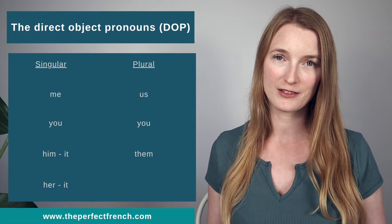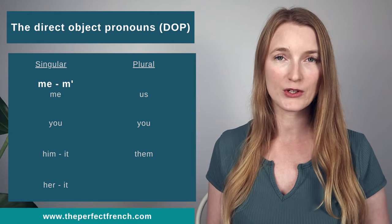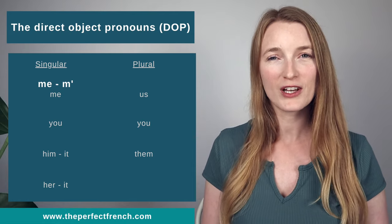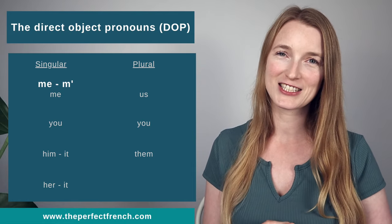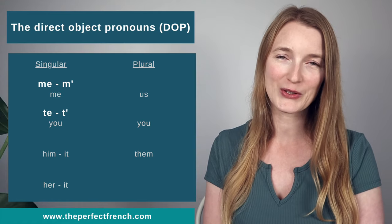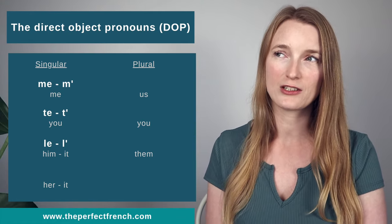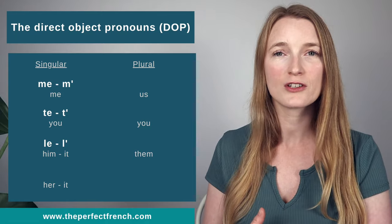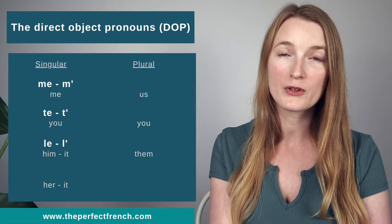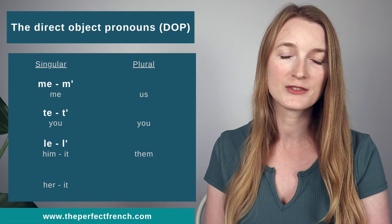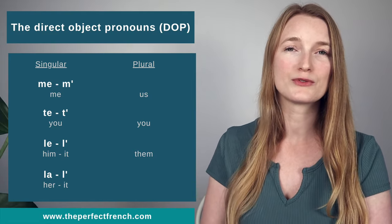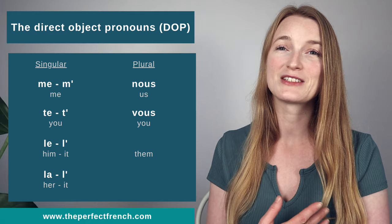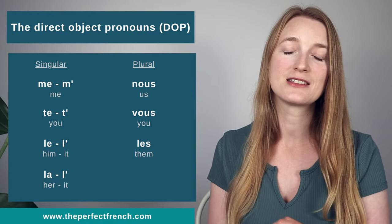Just like in English, we have different direct object pronouns. We have me or m' (before a verb starting with a vowel or silent H), te or t', le or l' for him or it, la or l' for her or it — because in French we have gender, so a masculine noun like "computer" takes le. We also have nous for us, vous for you, and les for them.